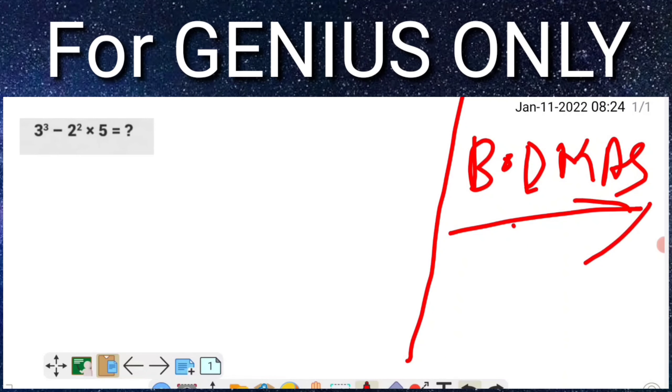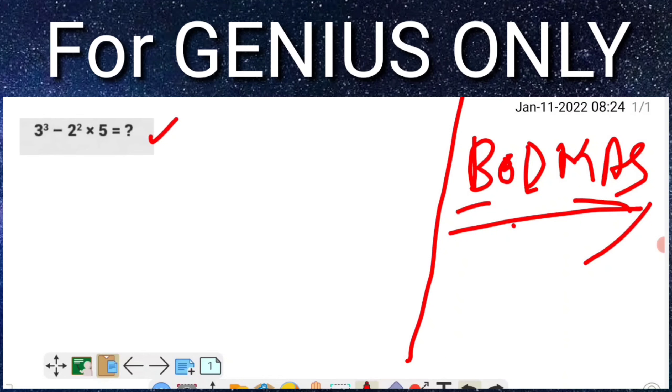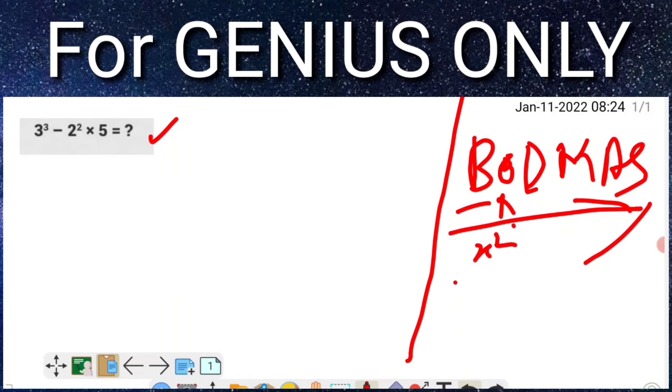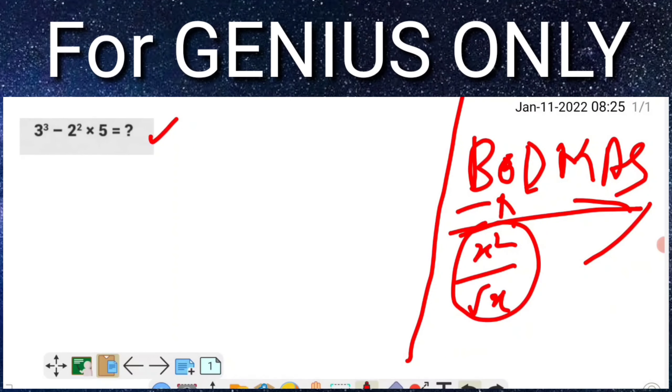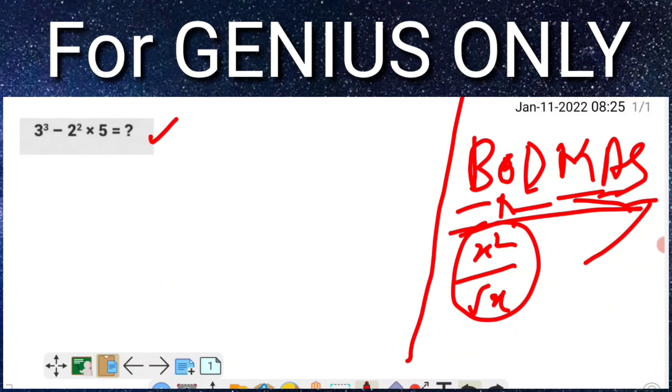So friends, BODMAS means bracket - if anything is available inside the bracket we have to solve that first. After that, 'O' means 'other' - a square and under a square. If that's available we solve that, then after that division, then multiplication, then addition, and last subtraction.